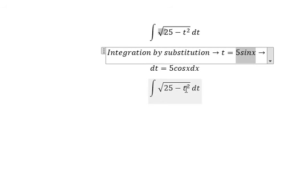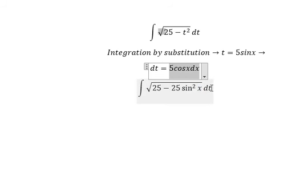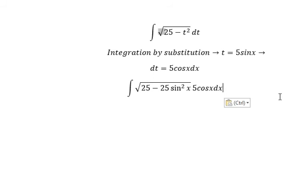5 sine x we put in here, you got about 25 sine x to the power of 2 times dt. We change this one. Now we simplify. Square root number 25 we put outside.